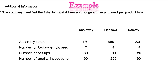The company identified the following cost drivers and budgeted usage thereof per product type. We have the three products COA, Fishbowl and Dami. Under them we have assembly hours — the amount of hours it took to assemble the product — the number of factory employees used per product, the number of setups performed per product and the number of quality inspections done per product.